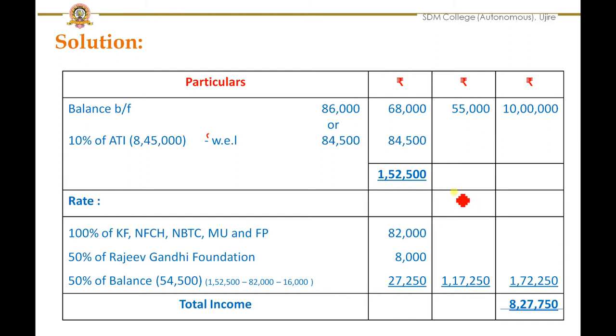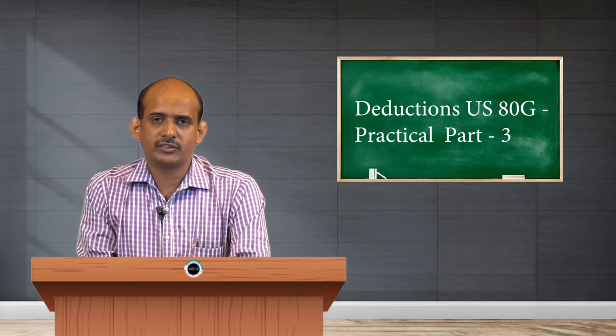Next, we have to compare the actual donation of rupees 86,000 with 10 percent of adjusted total income. So we have to calculate the adjusted total income first, then 10 percent of adjusted total income can be ascertained. If it is a without-limit donation, almost all donations falling under that category will be eligible at the rate of 100 percent. If they fall under the with-limit category, then the entire amount is not eligible for reduction directly. So for that we have to compare the actual donation with 10 percent of adjusted total income.